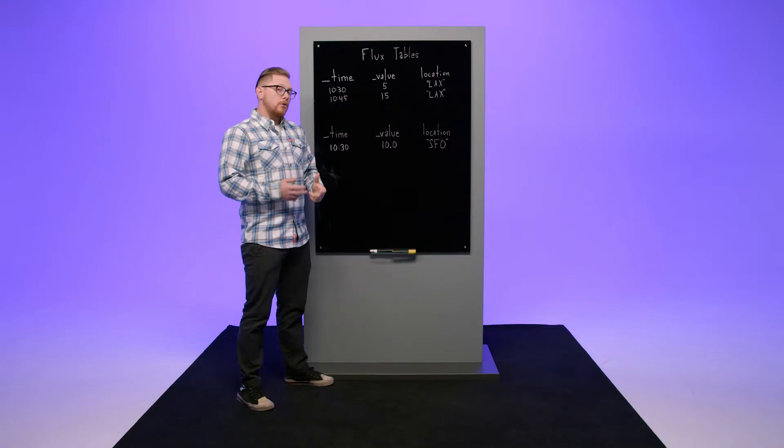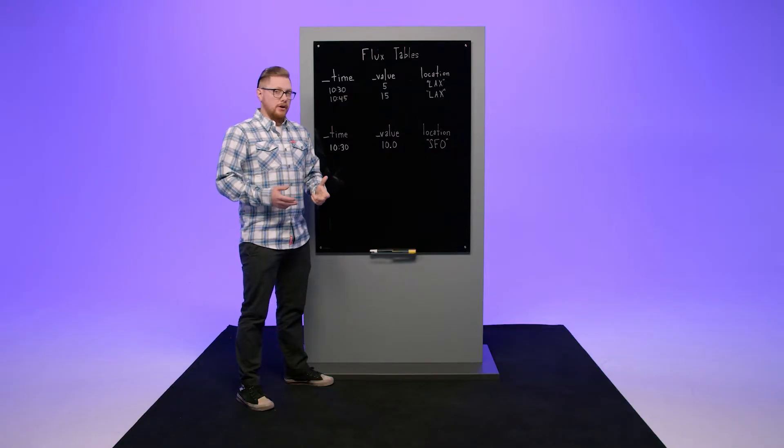Additionally, each table has a group key, which is a set of columns where each value in that column is the same. For more information about group keys, see the Flux docs.